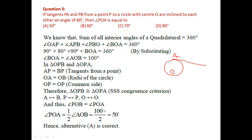PA is one tangent and PB is the other. Two tangents can be drawn from an external point. OA and OB are radii. The tangents are inclined to each other at 80 degrees — that is angle APB = 80 degrees. We need to find angle POA, which means we join PO. Only half of the total angle AOB is required.